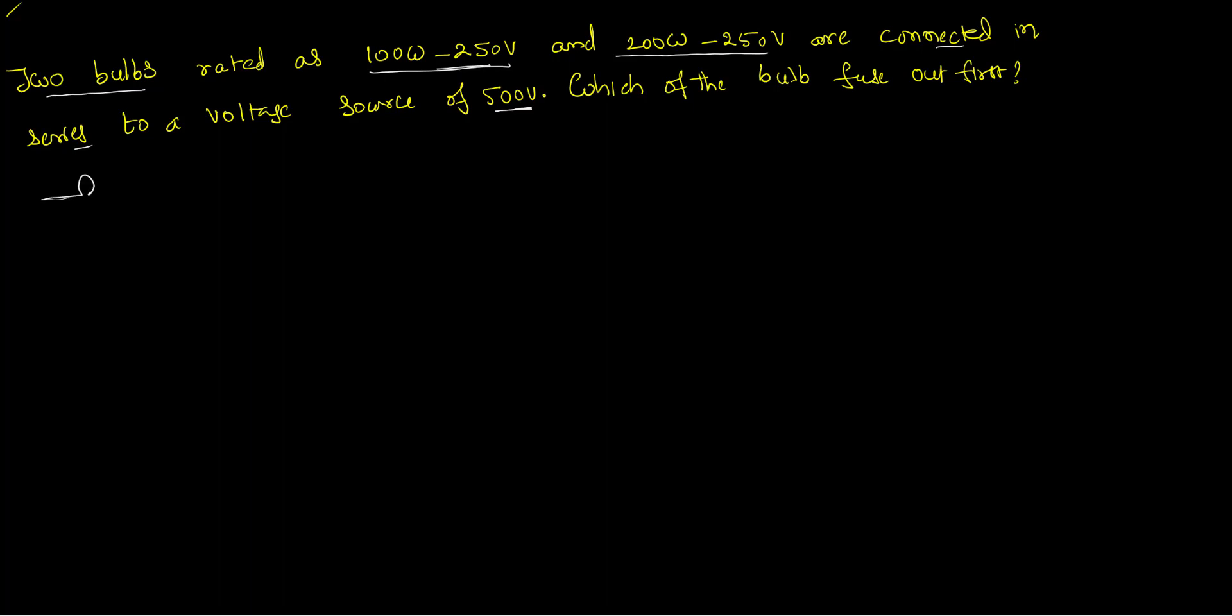This is bulb 1. This is bulb 2. They are connected to a voltage source. The voltage source is 500 volts. Current starts passing from here because they are in series the same current will go. But the voltage is distributed here.